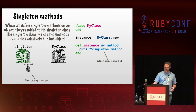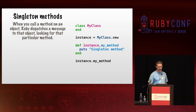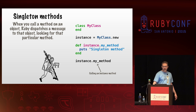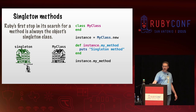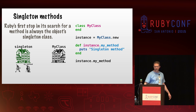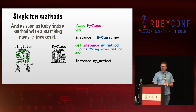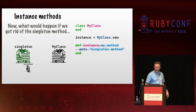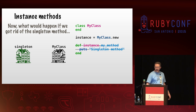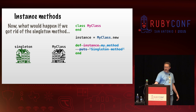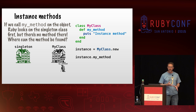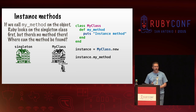So we define a singleton method here, and it will live on our singleton class. When you call a method on an object, Ruby dispatches a message to that object looking for that particular method. Ruby's first stop in its search for a method is always going to be the object's singleton class, because that's what the object refers to first. As soon as Ruby finds a method with a matching name, it'll invoke it. Now what would happen if we got rid of that singleton method and defined a method by the same name on the class instead?